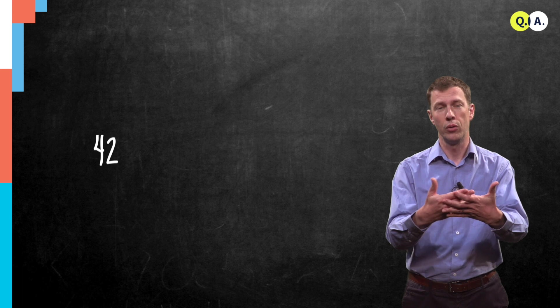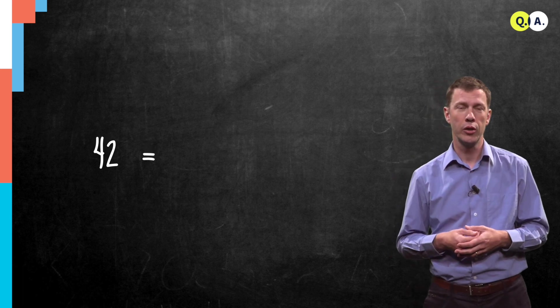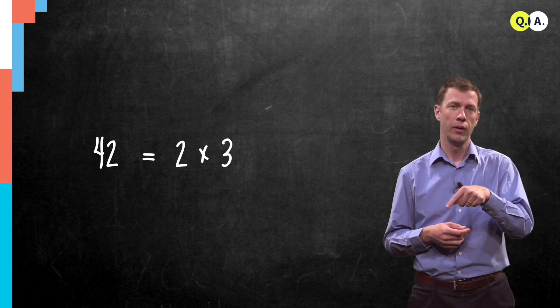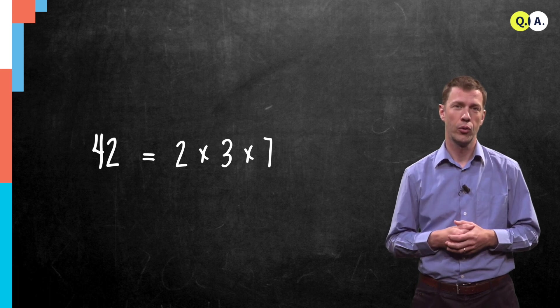For instance, the number 42 can be written as the product of 2 times 3 times 7, together that gives 42.